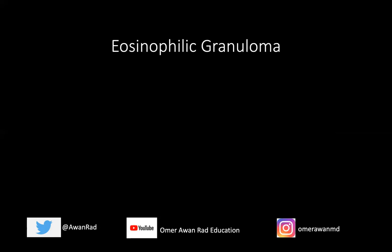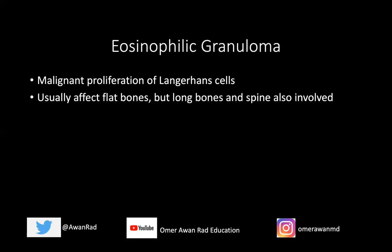This ended up being eosinophilic granuloma. I wasn't expecting you to know this — we biopsied this and it came back eosinophilic granuloma. Since this was EG, I want to talk about it briefly. It's a proliferation of Langerhans cells. EG affects flat bones, but in this case it affected a long bone, as it can, or the spine. Vertebral plana — a completely collapsed vertebral body — is one manifestation of EG. And while this case was metadiaphyseal, EG is also one of the differentials for epiphyseal lesions.